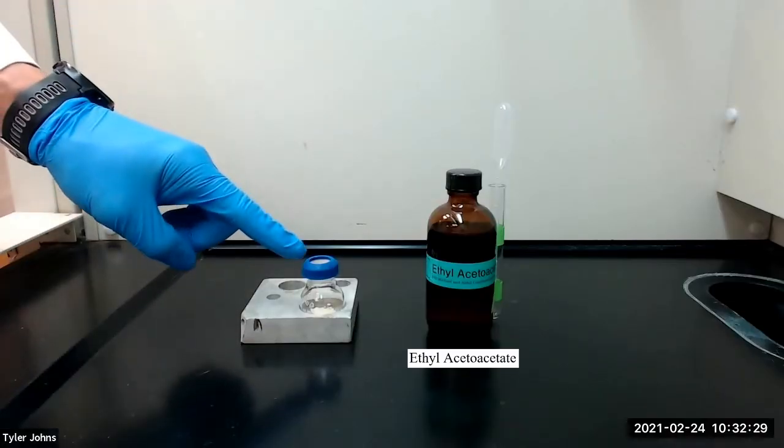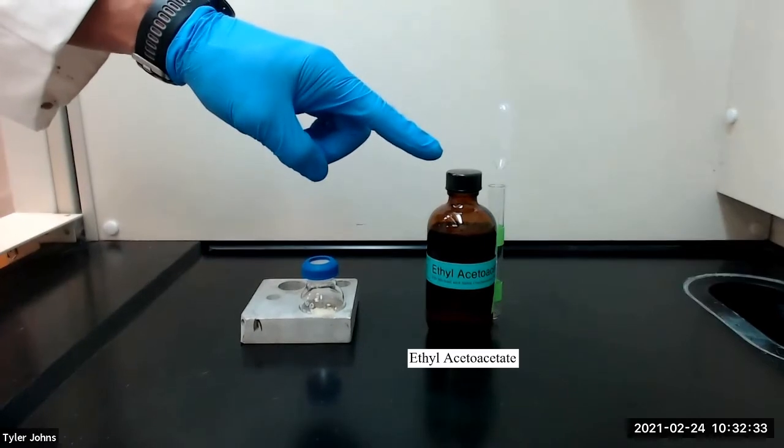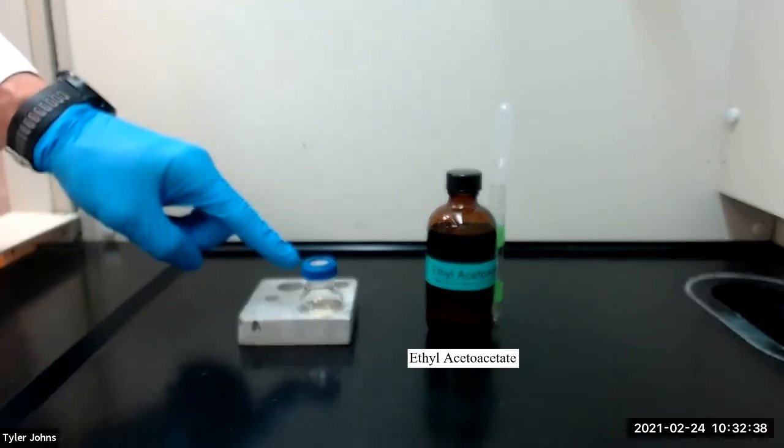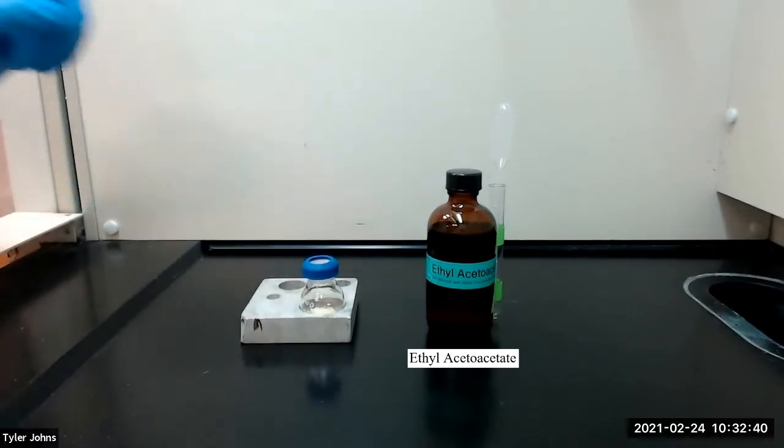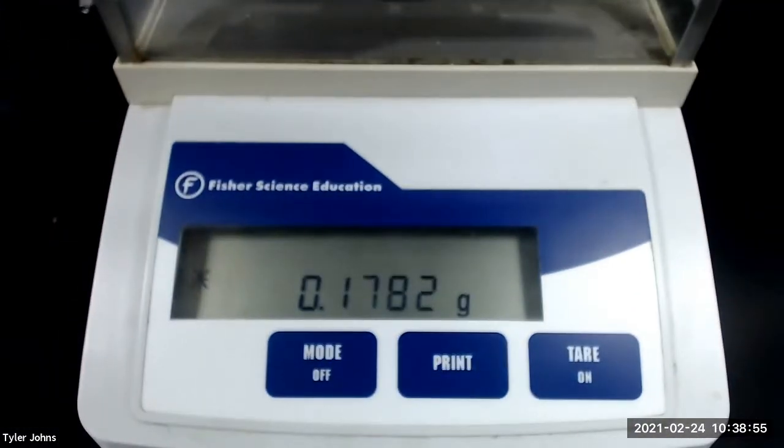I've added the trans chalcone to the 10 milliliter round bottom flask and we next need to add approximately 0.15 grams of ethyl acetoacetate to the same 10 milliliter round bottom flask. The mass of ethyl acetoacetate that we will be using is 0.1782 grams.